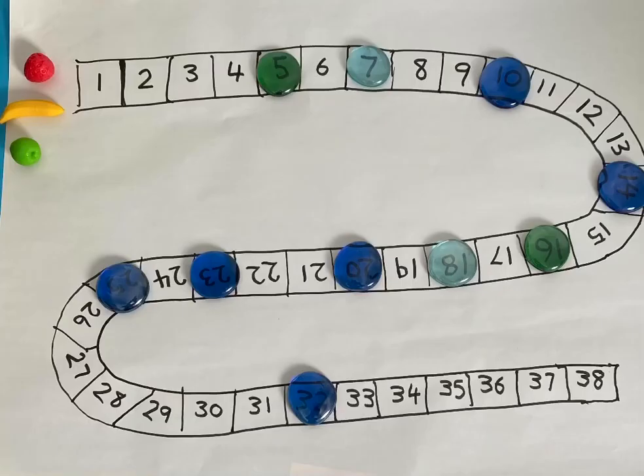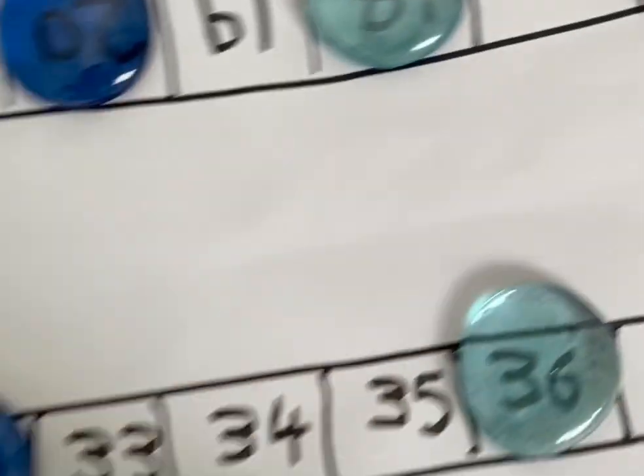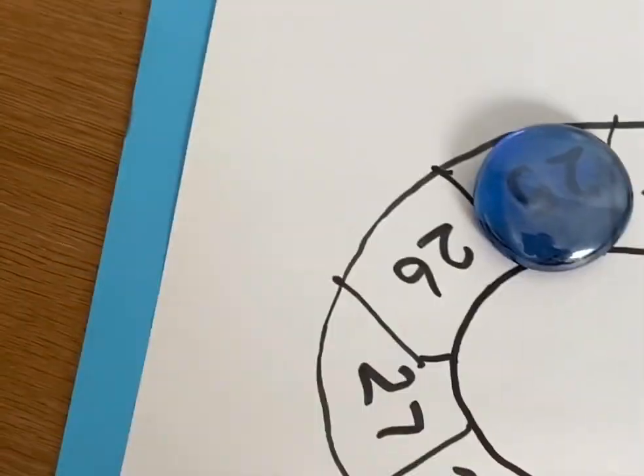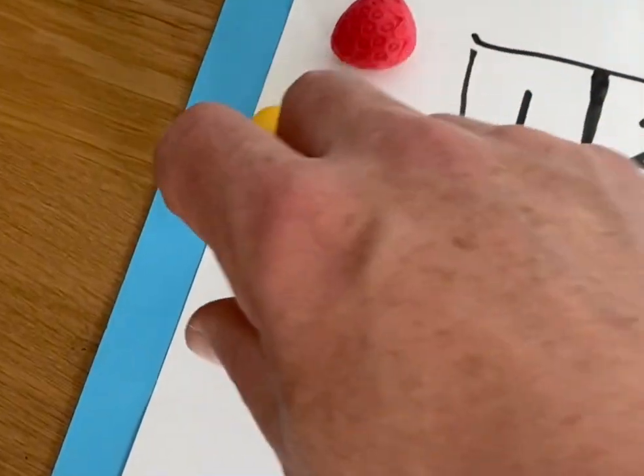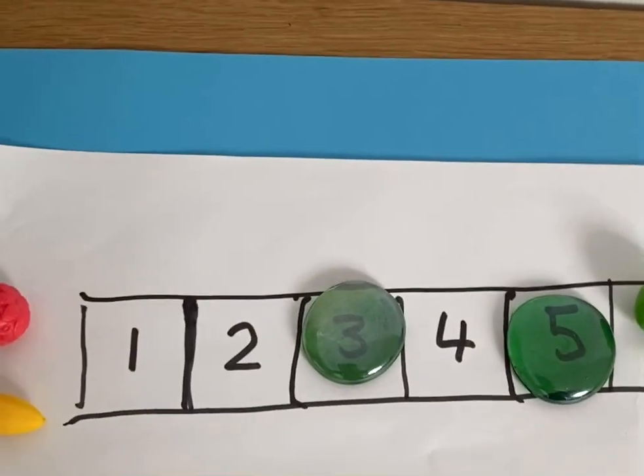For this game you need some treasure. I'm using my glass beads, but you could use anything - it could be some breakfast cereal like Cheerios that you could munch if you win, it could be coins, it could be paper clips, it could be anything. So put your treasure on any square. What I like about the glass pebbles is you can see the numerals through the glass.